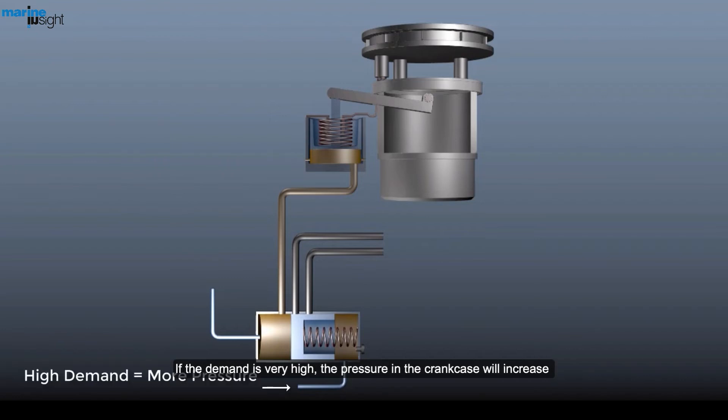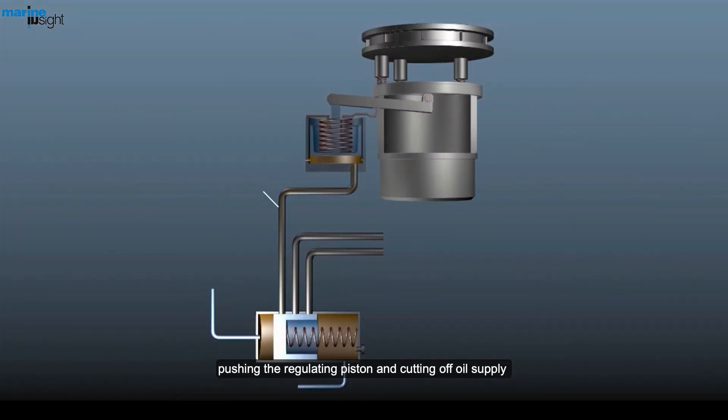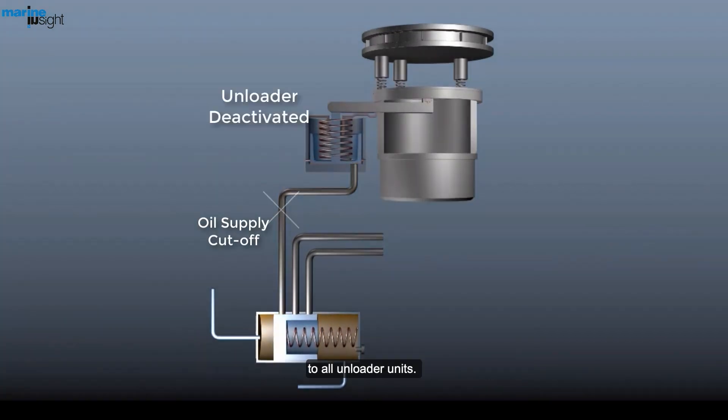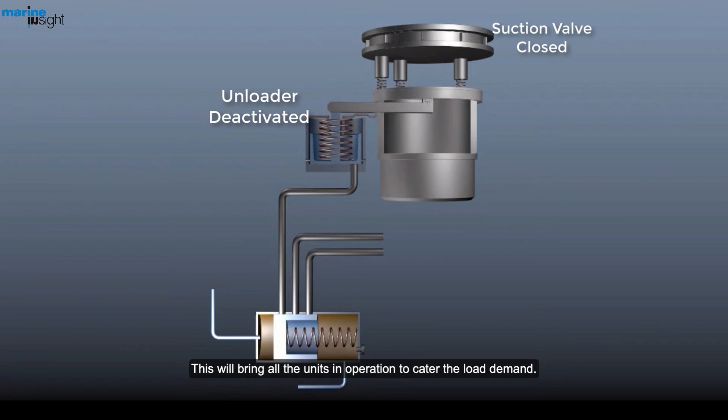If the demand is very high, the pressure in the crankcase will increase, pushing the regulating piston and cutting off oil supply to all unloader units. This will bring all the units in operation to cater the load demand.